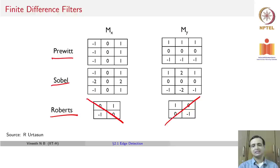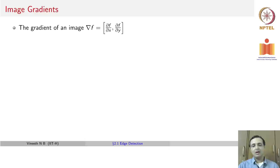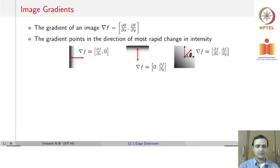An obvious follow-up question is: how do we find edges in any direction? Do we have to convolve with many different filters? Before we get there, let us formally define a few quantities. The gradient of an image, grad f, where f is the image intensity, is given by a tuple of the partial derivative of f with respect to x and the partial derivative of f with respect to y — the gradient in the x direction and the gradient in the y direction.